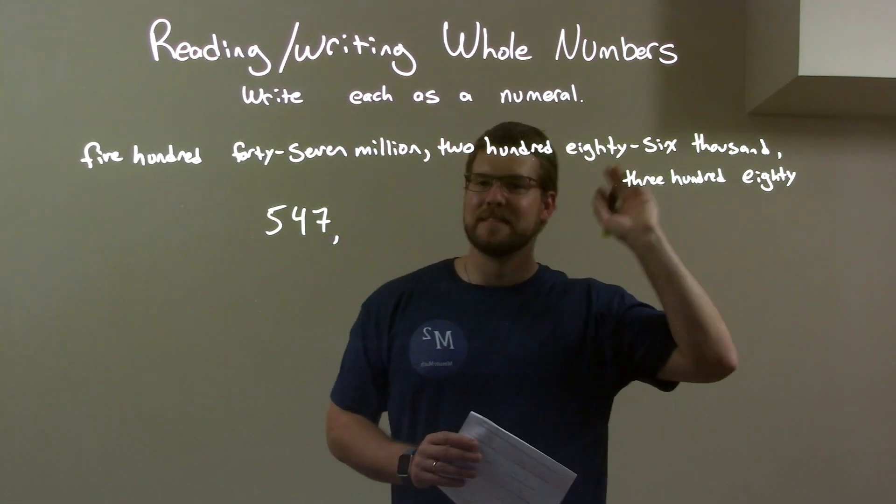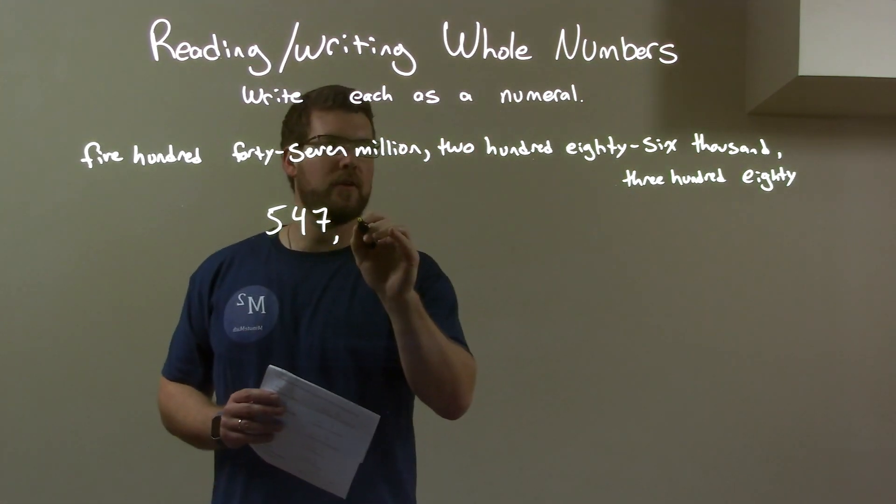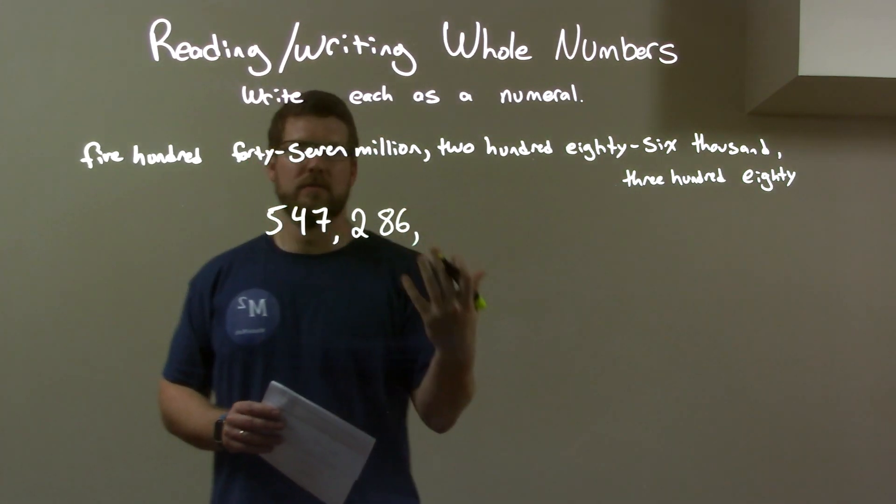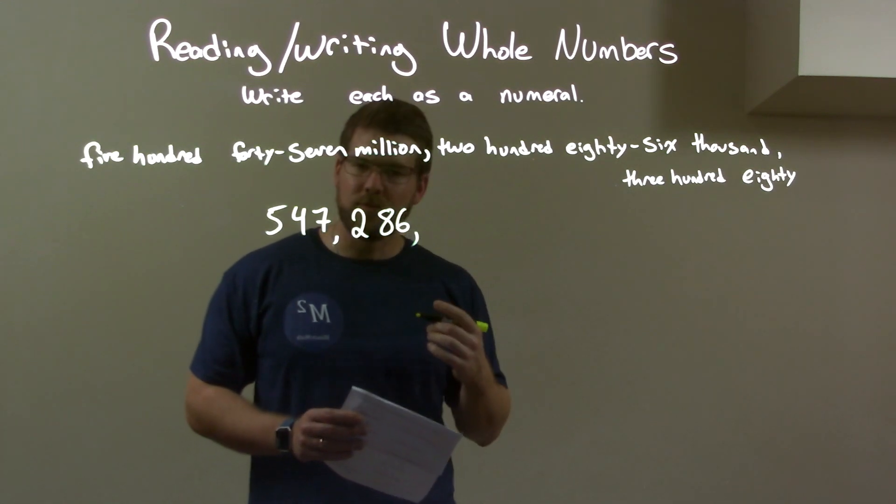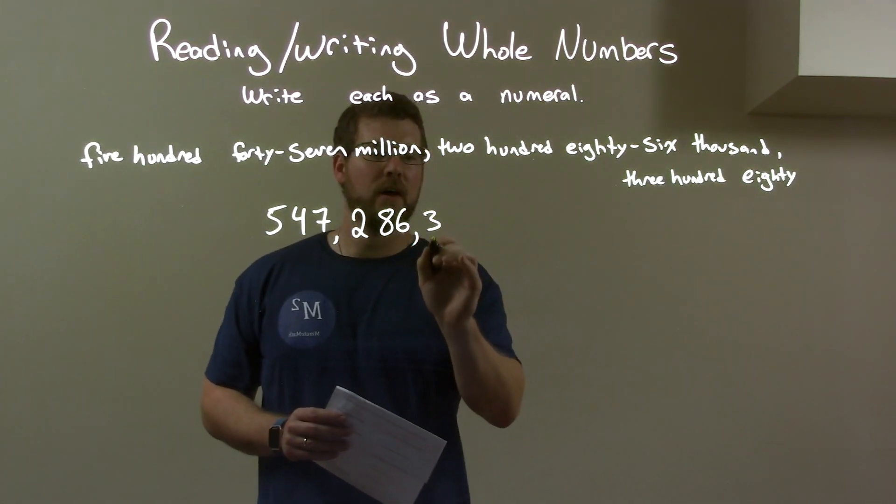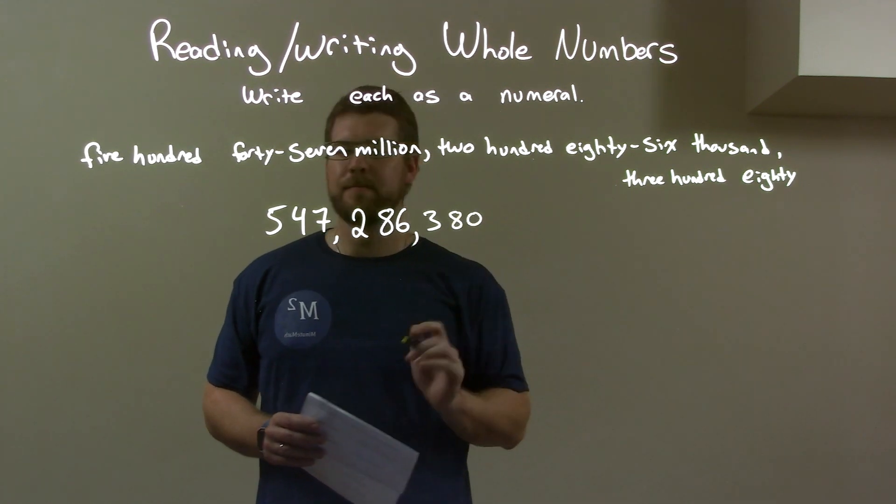Then we have two hundred eighty-six thousand. So we have two hundred and then eighty-six. Two hundred eighty-six in the thousands place, so we have three zeros afterwards. Then we have three hundred eighty. Three comes first in the hundreds place, then it's just eighty. And there we go.